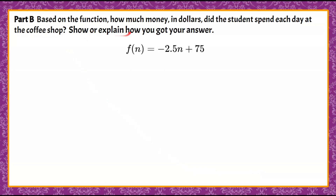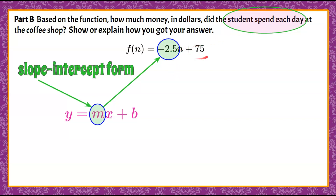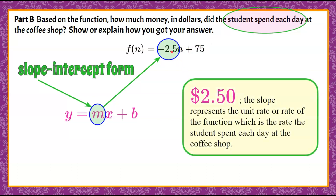Here's part B. Based on the function, how much money in dollars did the student spend each day at the coffee shop? Understanding that this function is in slope-intercept form, we're looking for the unit rate, which is our slope. Each day, how much was spent — our unit rate, rate of change — is our slope, which in this function is negative 2.5. It's the coefficient of our variable. It's negative because the student is spending money — it's coming off the gift card. So negative 2.5 represents $2.50 being subtracted from the gift card every day. The slope represents the unit rate, or rate of the function, which is the rate the student spends each day at the coffee shop.